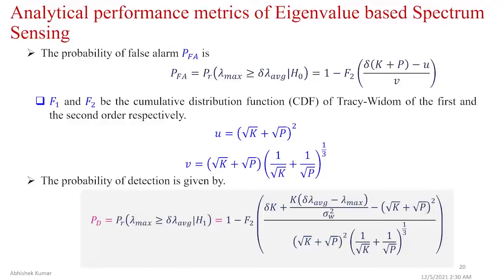The analytical performance metrics for eigenvalue-based detection at the FC are derived in closed form. The first expression gives the probability of false alarm, and the second expression gives the probability of detection at the FC.